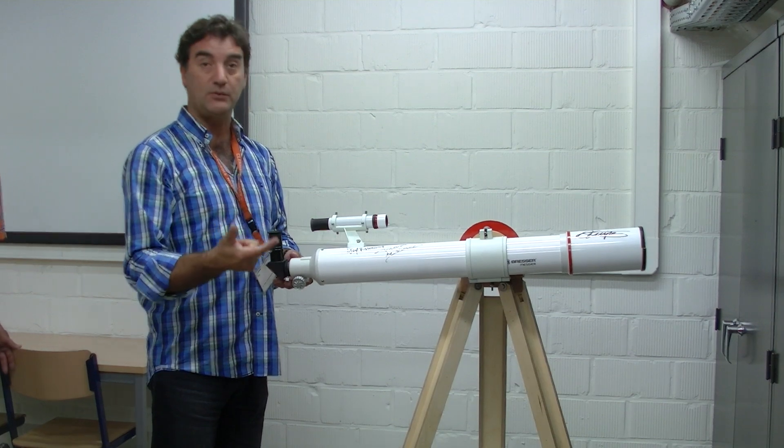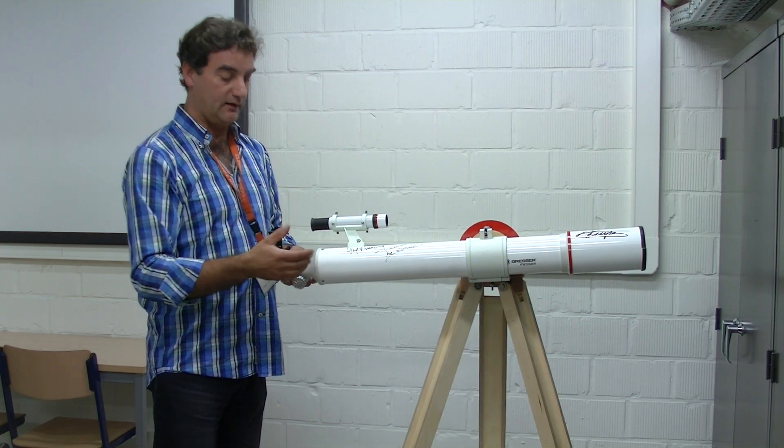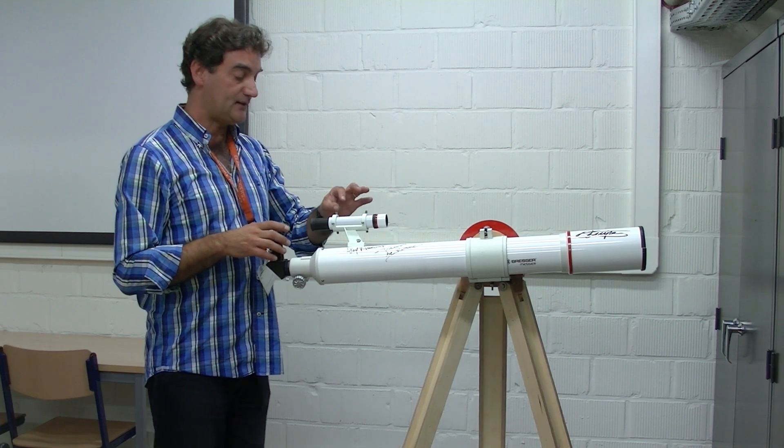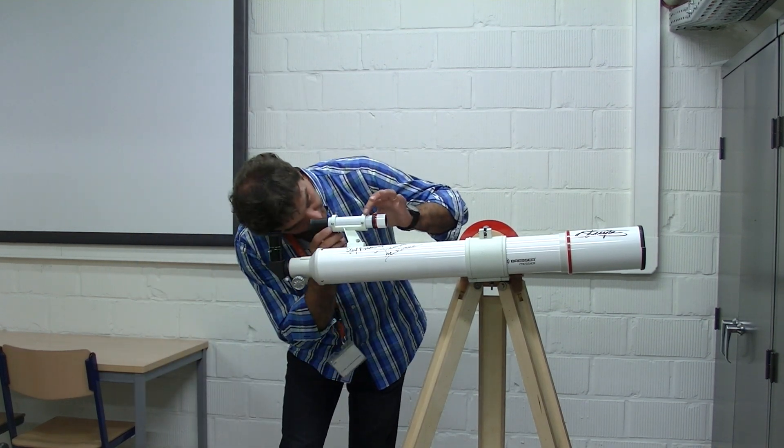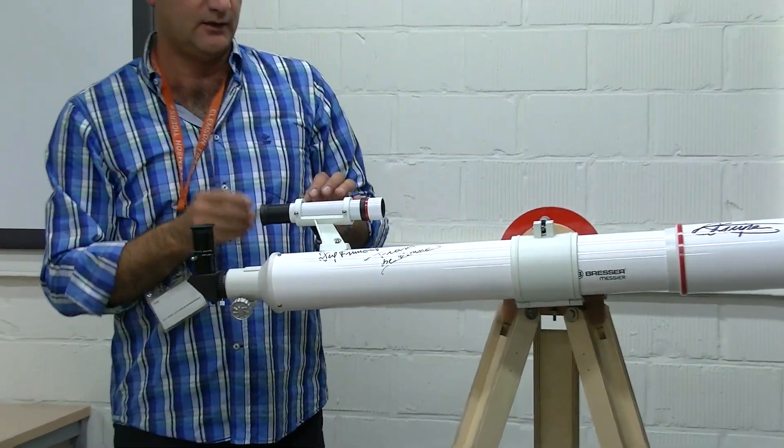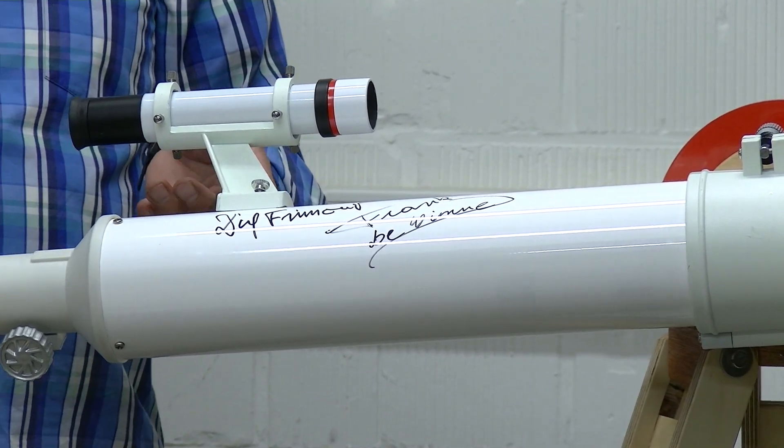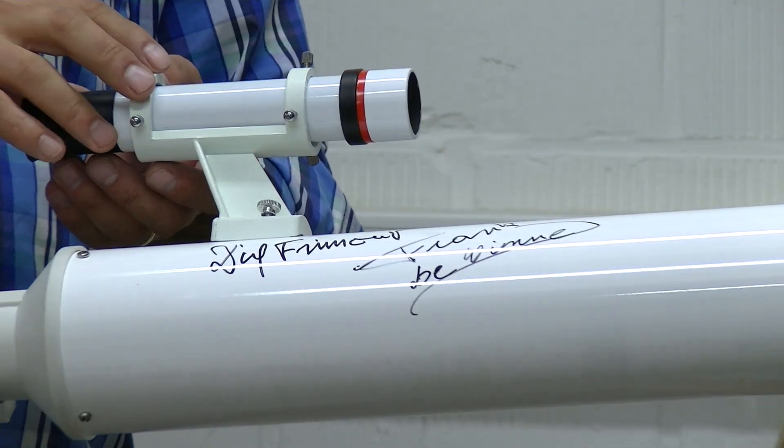This can be a lamppost, a tree, a church, a top of a building. Just something that you can recognize in the telescope. Next step is to look through the finder. You have these six screws, and you have a reticle. And with these six screws, you can align the finderscope to match the field or the object that you have centered in your main telescope.